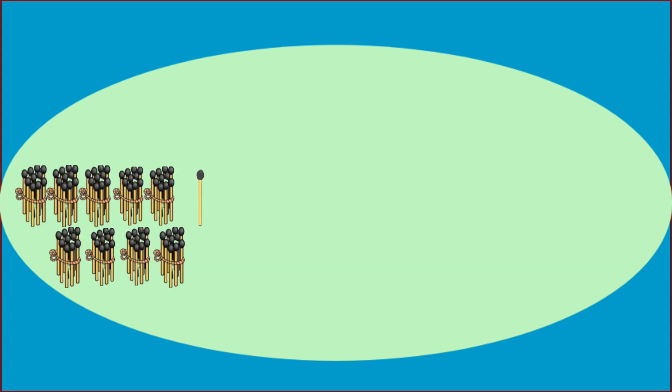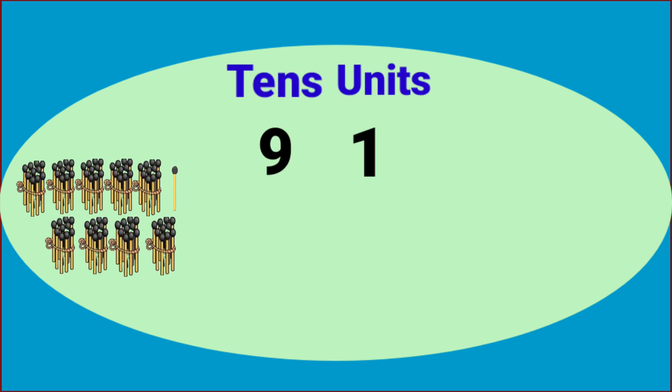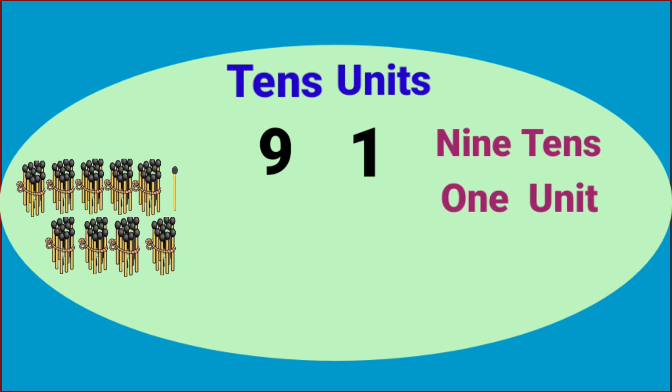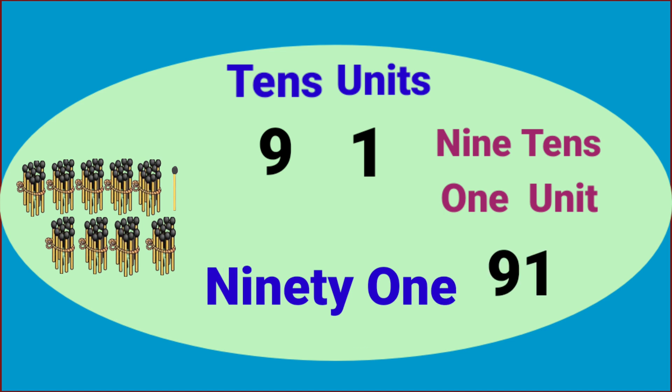Nine bundles and one single matchstick makes nine tens and one unit. Nine tens and one unit makes ninety-one.